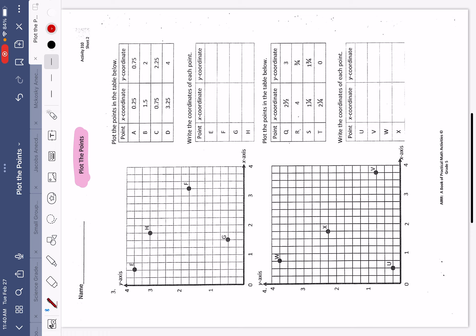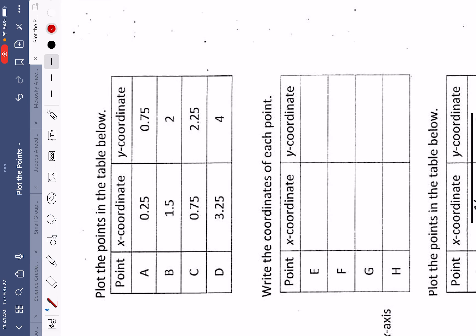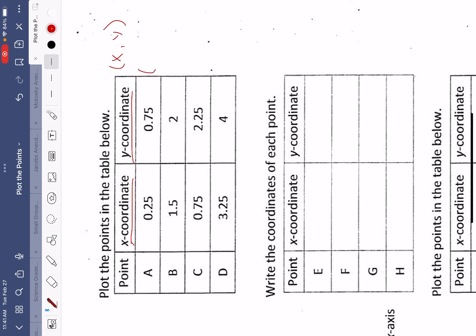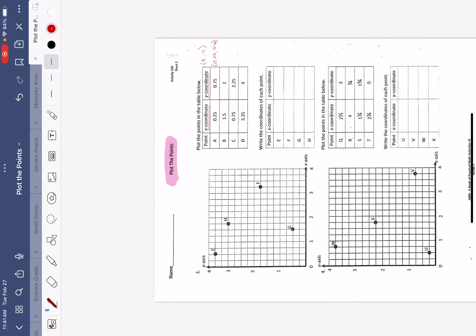We are going to be plotting the points in this table given right here, but it looks a little bit different this time. Usually when we've been seeing our points, they've been in ordered pairs, like where we have an x, y. But in this case, we just have a table where it's giving us x-coordinates and y-coordinates. We could go ahead and label the x and y-coordinates in an ordered pair, but we don't have to because they just kind of list them out for us.